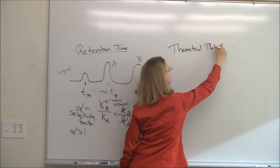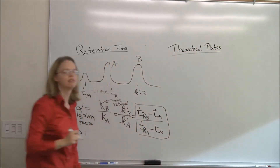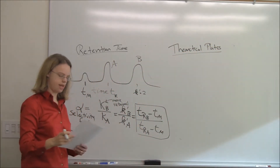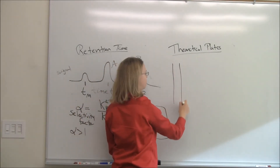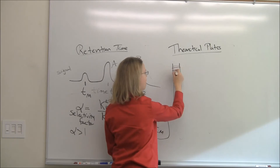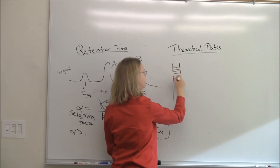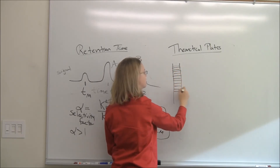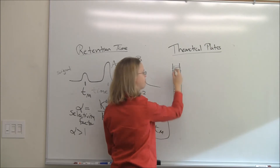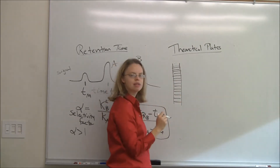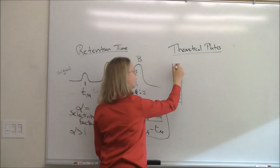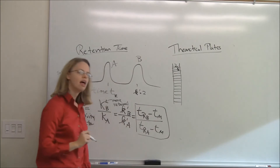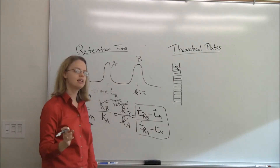There's also a question of how good a column is, which leads us to the theory of theoretical plates. The idea is to take a column and divide it up into little segments. In each segment, imagine doing a separation — coming to equilibrium between the stationary phase and the mobile phase — and then the analyte moves to the next segment, and the next, on down the line. That's the idea of theoretical plates.